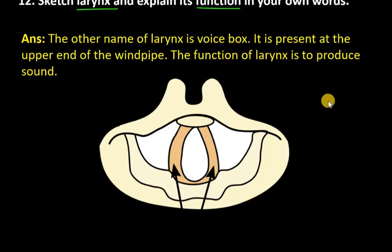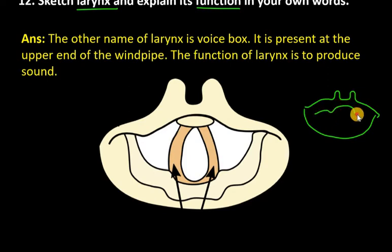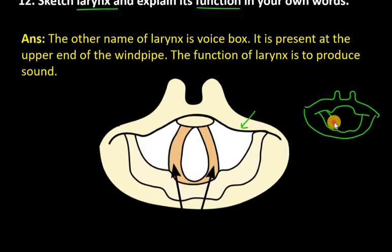So, how can you start it? First of all, you have to make an outer covering. This is the outer covering. And after that, we have to make a black line, which you can see, which is connected to the larynx. After that, you can draw the line below. Then again, another line you can see, which is above it.